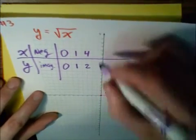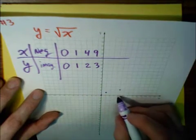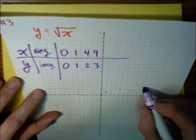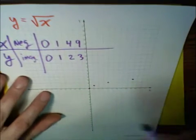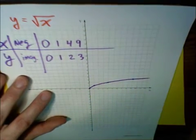Likewise, I'm going to put in another perfect square, 9. I know the square root of 9 is 3. So I can graph 9, 3. And so your graph is going to look like this.